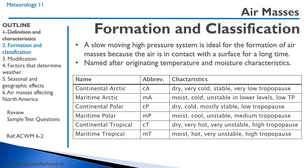A slow moving high pressure system is ideal for the formation of an air mass because the air is in contact with the surface of the earth for a long time. So an air mass adopts the characteristics of the land mass beneath it.